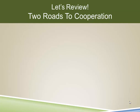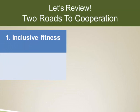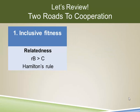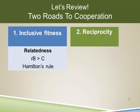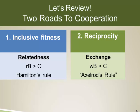Let's review for a minute and try to gather some context from what we've already studied. So far we've examined two roads to cooperation. One of those is based on inclusive fitness and that of course derives from Hamilton's rule, where R is the coefficient of relatedness. We've also looked at reciprocity, and in this case we found using what we called Axelrod's rule that relatedness wasn't required, but rather a willingness to exchange benefits that exceed the cost.